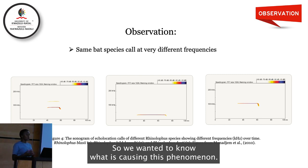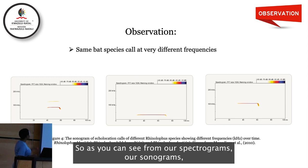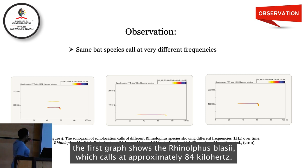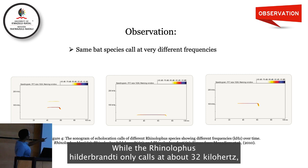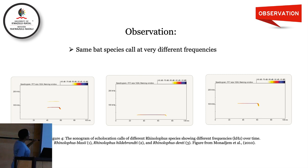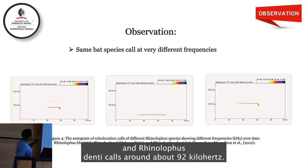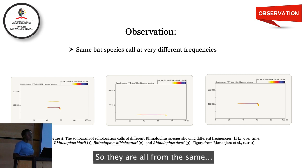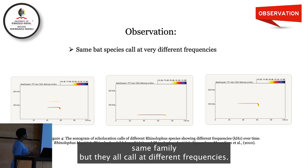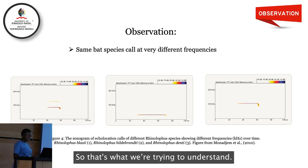We wanted to know what is causing this phenomenon. As you can see from our sonograms, the first slide shows Rhinolophus sp. which calls at approximately 84 kilohertz, while another Rhinolophus species calls at about 82 kilohertz, and another calls at around 92 kilohertz. They are all from the same family but they all call at different frequencies — and that is what we are trying to understand.